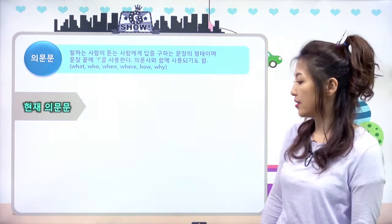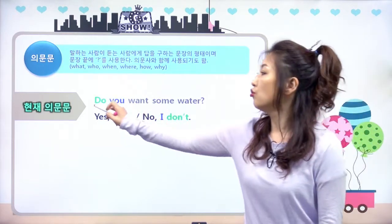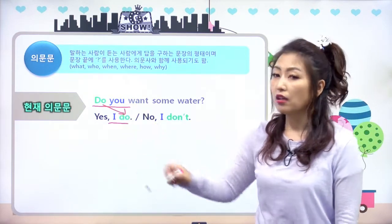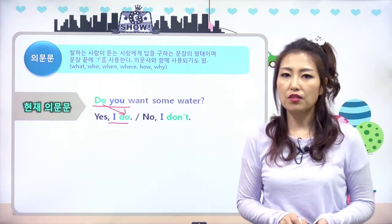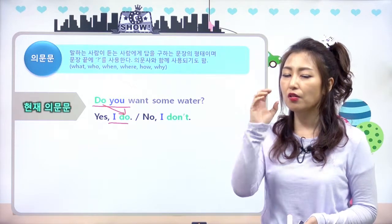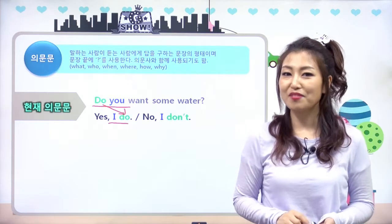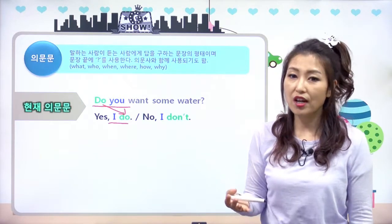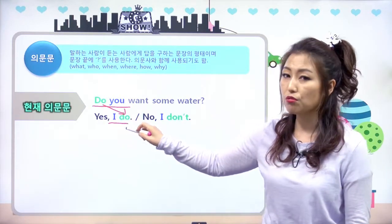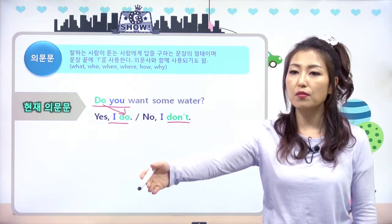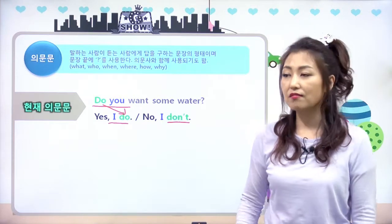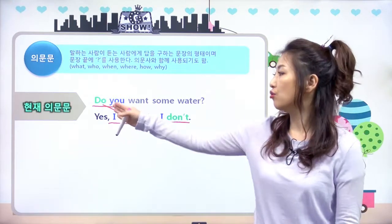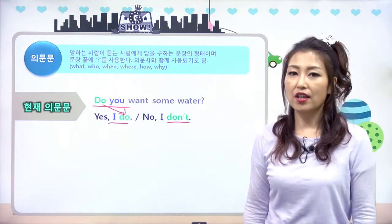질문하는 걸 했으니 답을 하는 것도 알아야겠죠? 현재 의문문은 예를 들면 do you로 물어봤으면 Yes, I do. No, I don't. 이렇게 답해요. 영어는 질문을 듣고 그대로만 답하면 80%는 맞아요. 'Do you want some water?' 너는 물 좀 줄까? 이랬더니 Yes, I do. No, I don't. 이렇게 되는 거예요. do you로 물어봤으니까 I do로 답하면 됩니다.